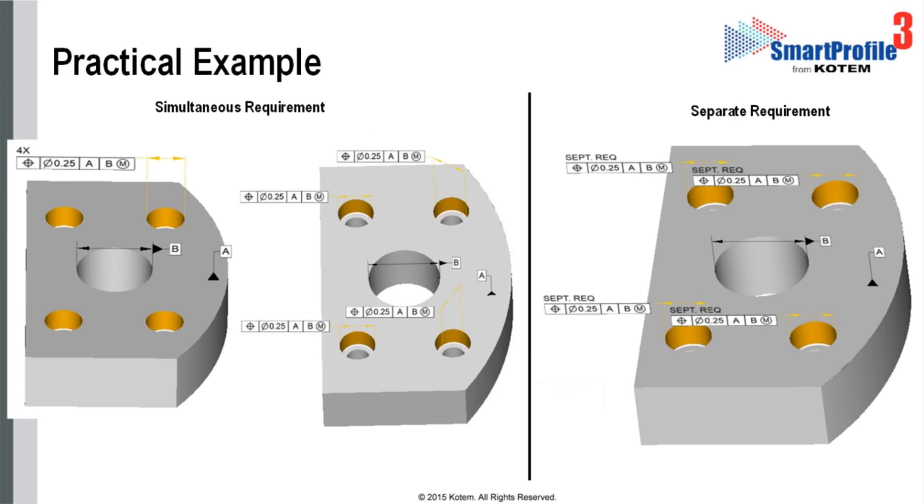Let's look further into the differences between simultaneous and separate requirements by comparing the two tolerances in this example. On the left, we see that simultaneity applies to the four feature control frames because datums A and B are referenced in the same order with the same modifiers.